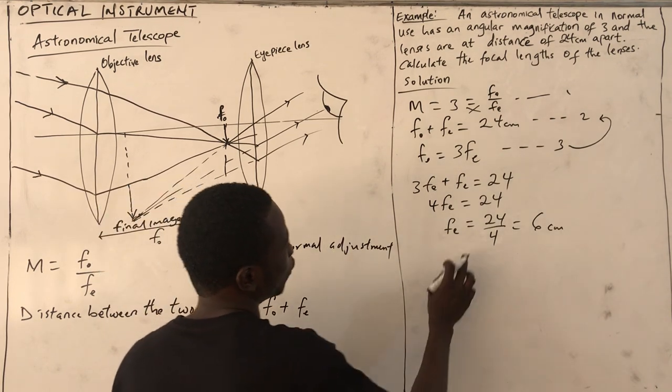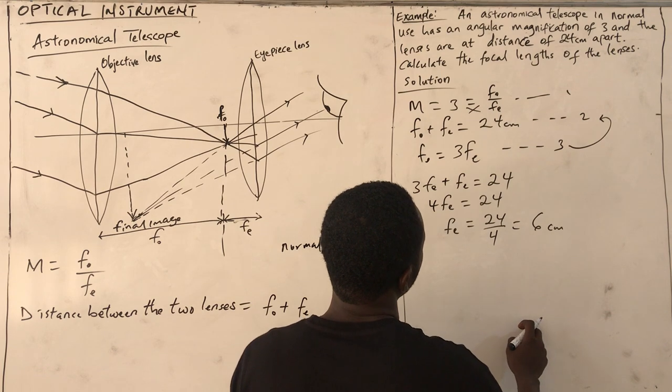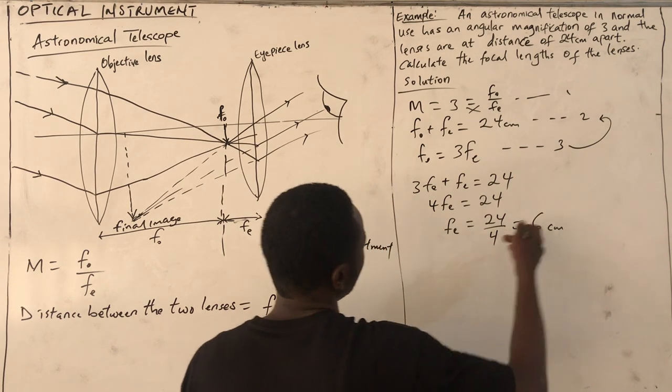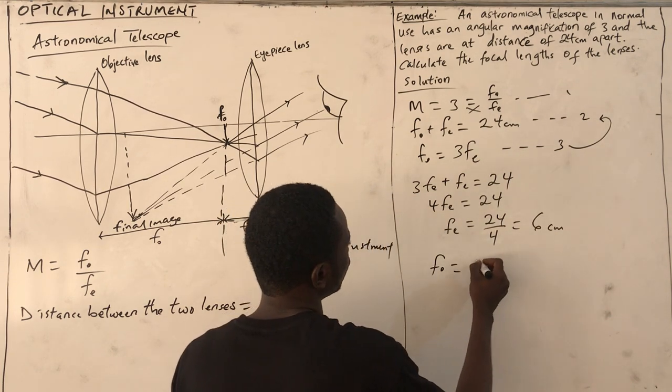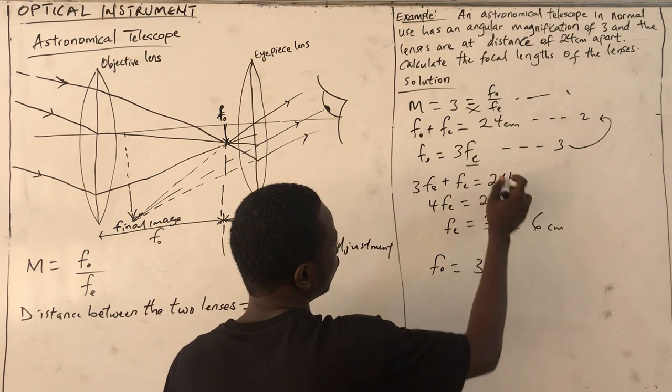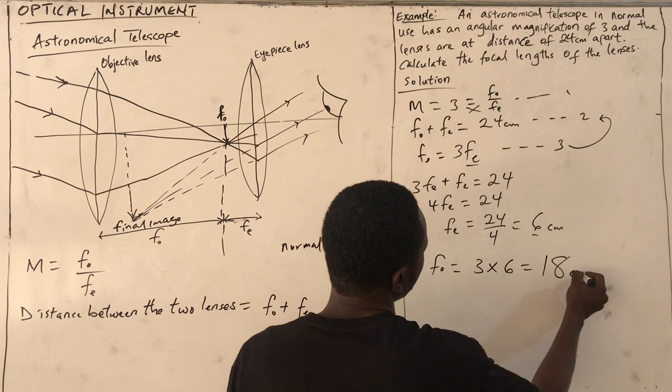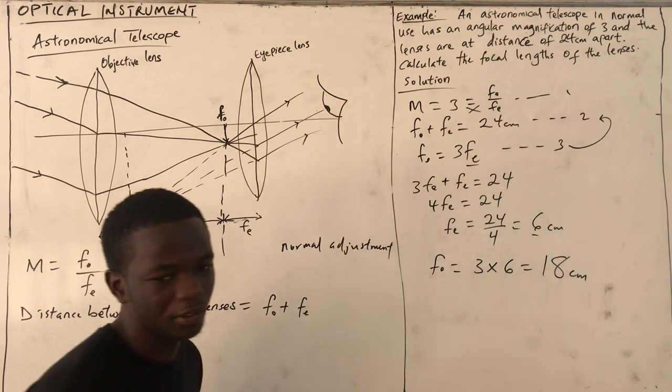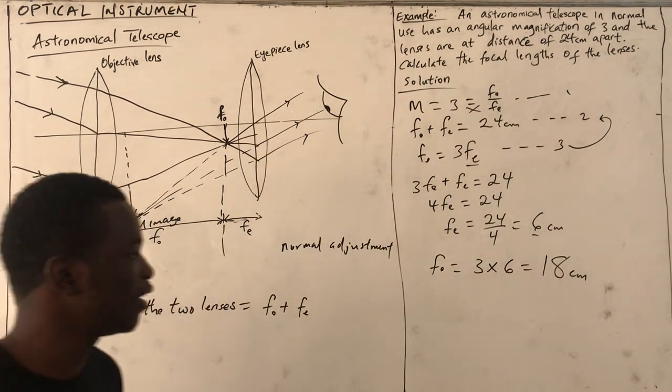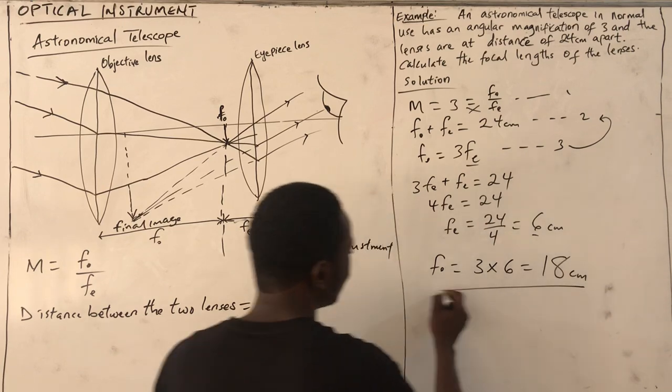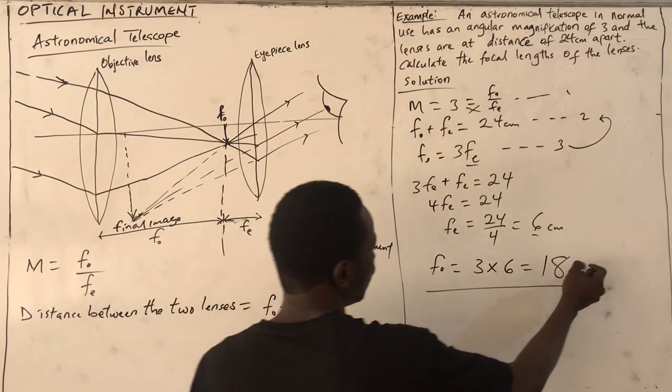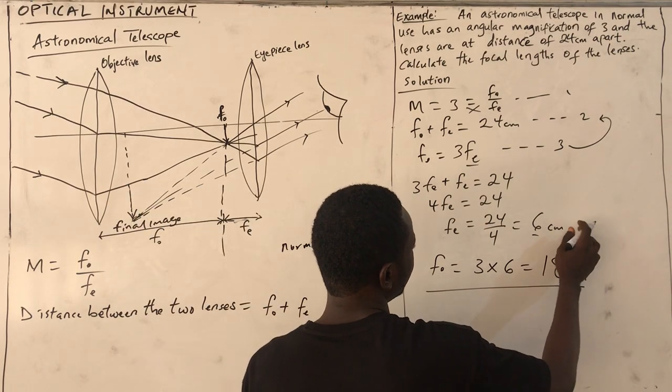From equation 3, we can now get F₀ = 3 × Fₑ = 3 × 6 = 18 cm. This confirms that the focal length of the objective lens must be greater than that of the eyepiece.